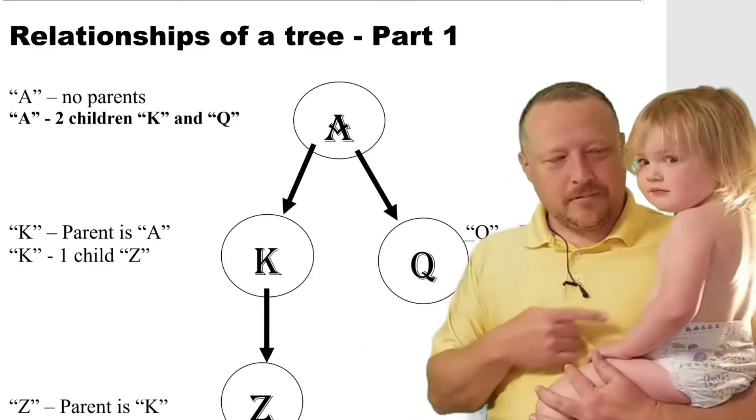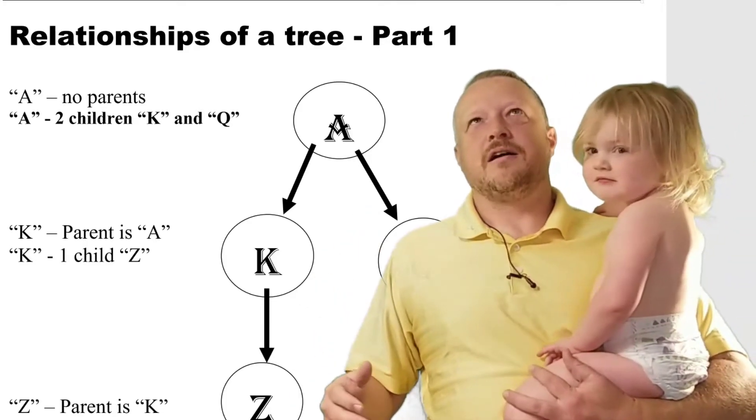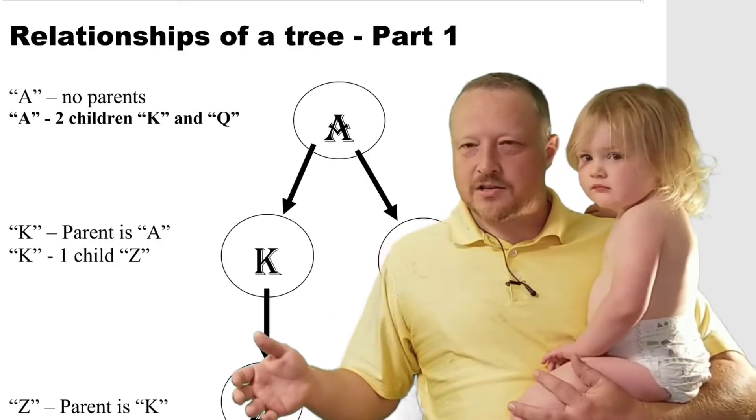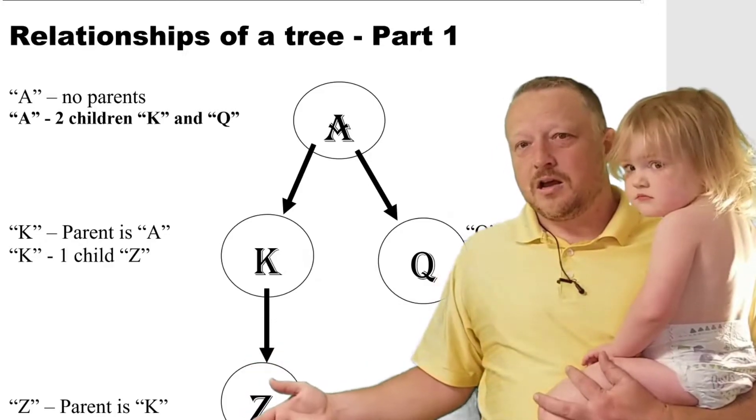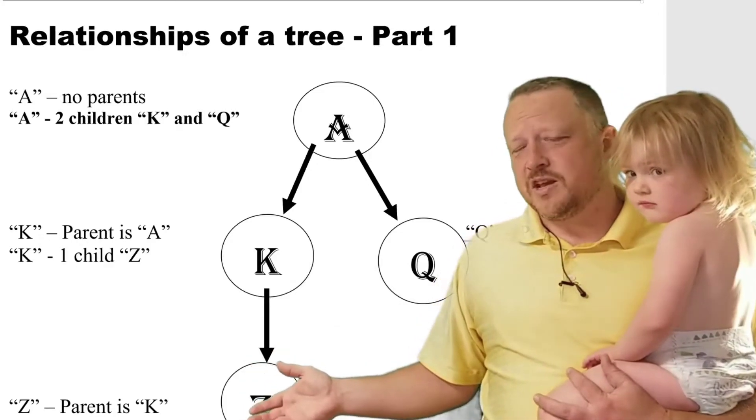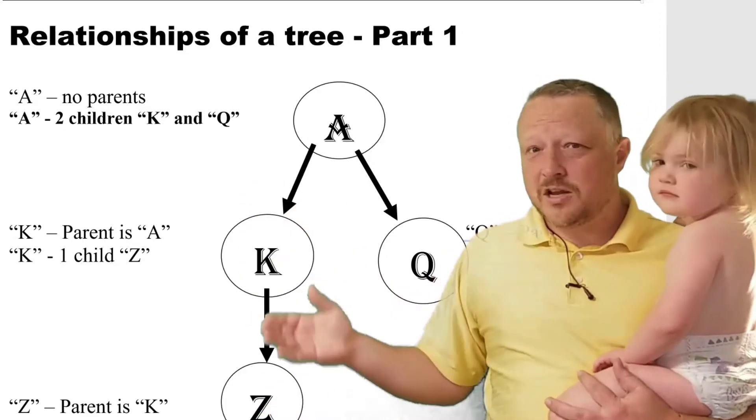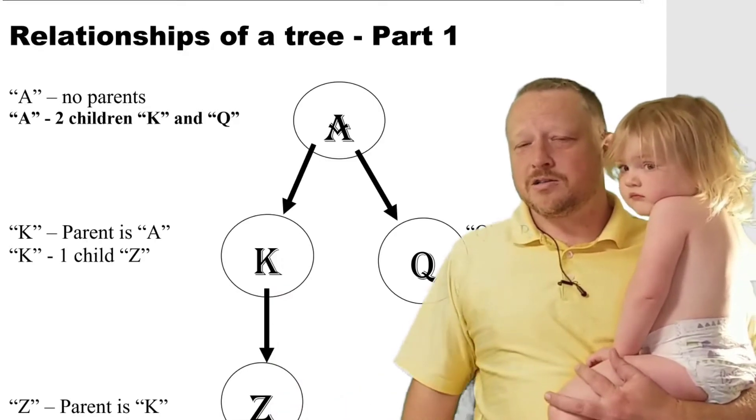So I would be at A, and Blair, this little fart right here, would be K. Now, God forbid, and hopefully another 6,000 years, Blair will become a parent of a child named Z. You never know by those days. But as just like a normal family tree, those kids could end up being parents later on.